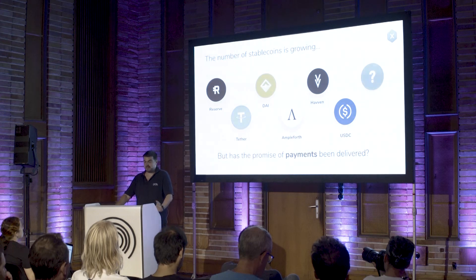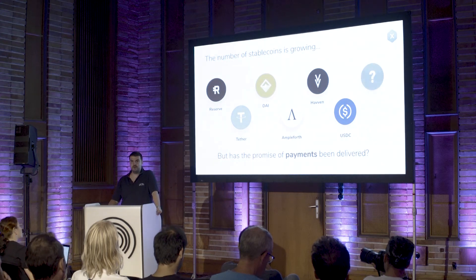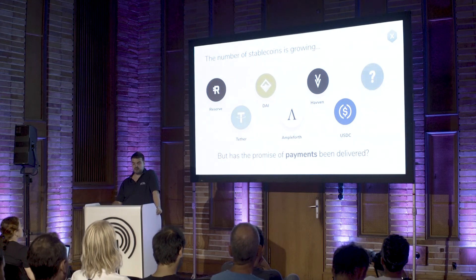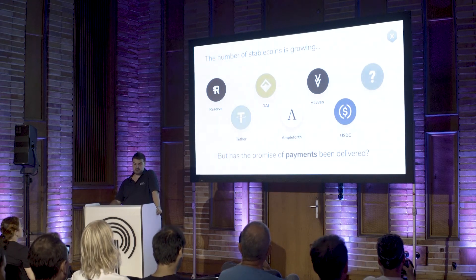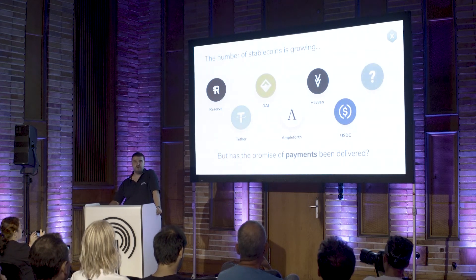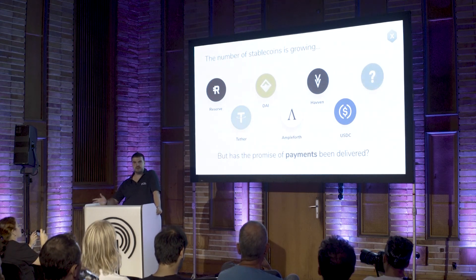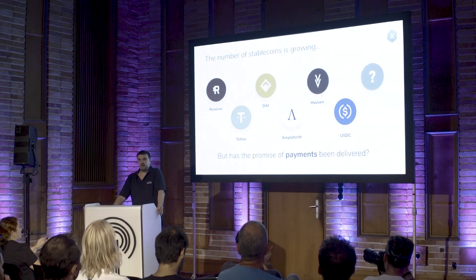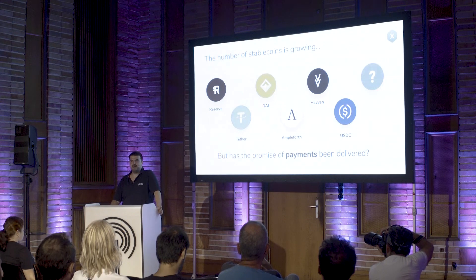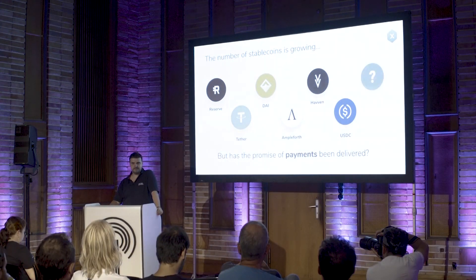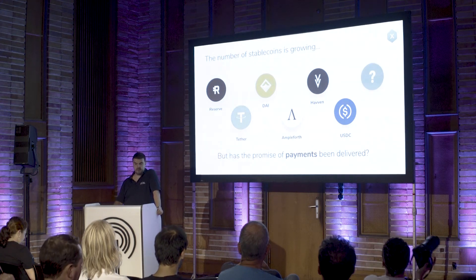The number of stable tokens is growing. Some of them are very used, like USDC or USDT. And some of them are moving into something else, like haven transforming into synthetics. We all love DAI because it's basically the only stable token with programmatic reserves.